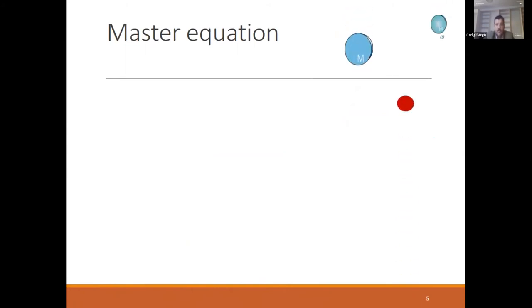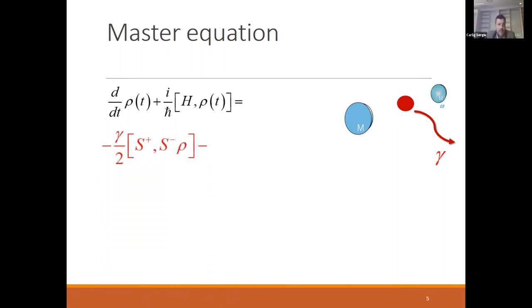If we talk about the ideal system, the master equation in the absence of any decay and leaking is given by this equation. But if we have dissipative processes, in a real system the master equation has more terms. The decay process for the atom is described by the red terms, and the blue terms describe the losses in the cavity, in the resonator.